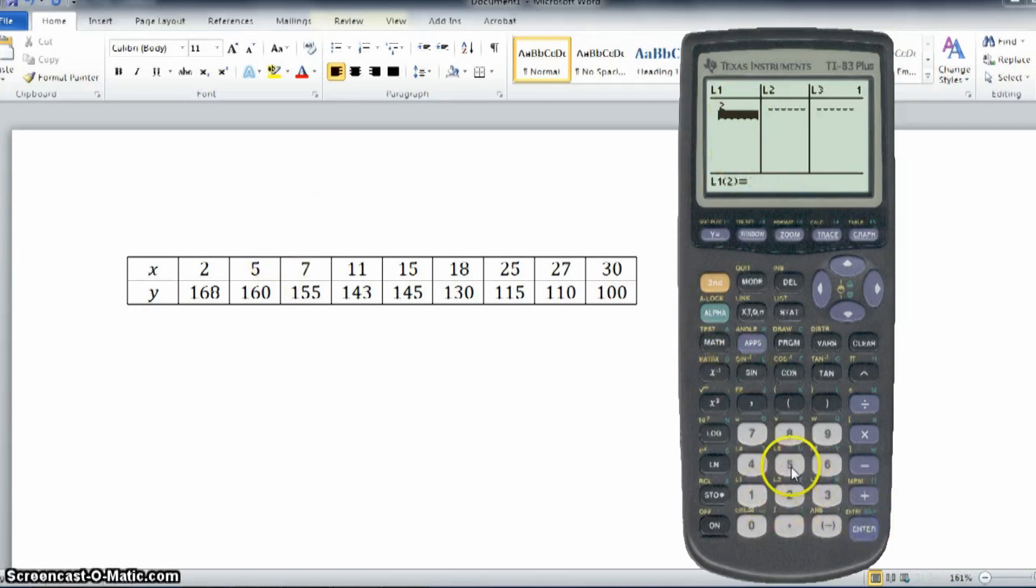We're going to have two, five, seven, eleven, fifteen, eighteen, twenty-five, twenty-seven, and thirty. Okay, and then we're going to go to the right.